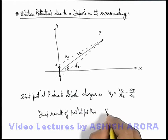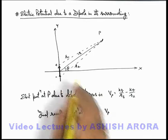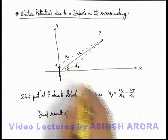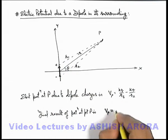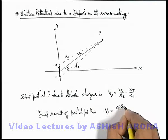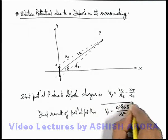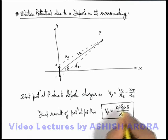This final result after calculation of the substitution of r1 and r2 in terms of r and theta, you'll get is kp sine theta by r square. This is the result we are going to get, so just keep it on your tips.